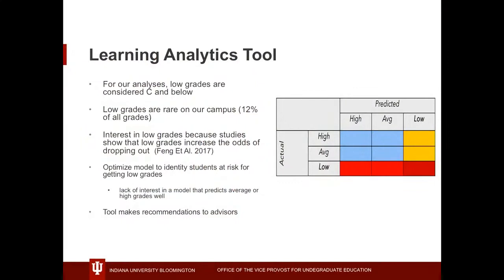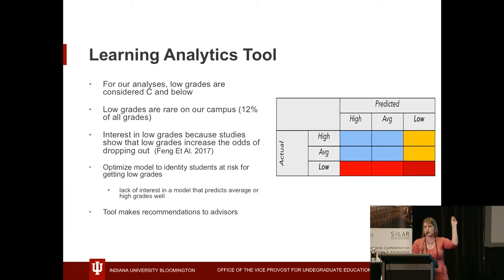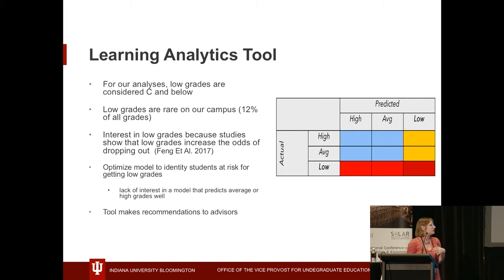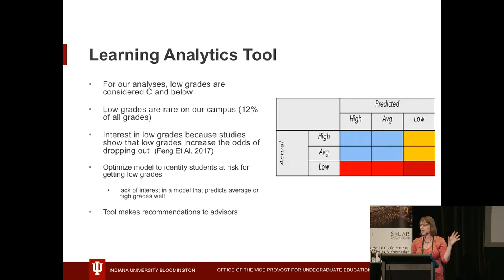For our analyses, we were really interested in students at risk of getting low grades in specific classes. For us, a low grade is a C or below, which represents only 12% of classes. We're interested in this because even just one low grade in a class can mean a student is less likely to be retained — low grades can create a situation where a student doesn't continue. We wanted to optimize the model to identify students at risk of those low grades, not focus on students who are doing well, since so many of our students are doing well.